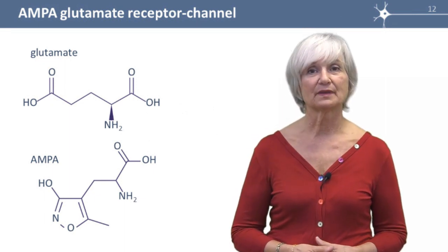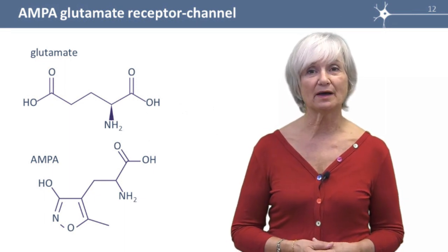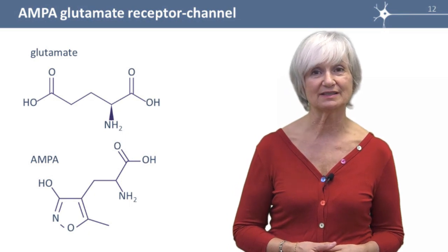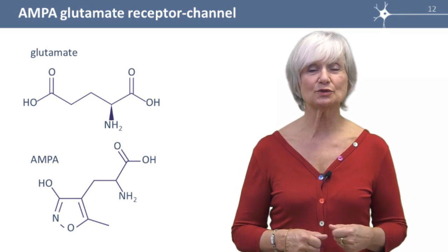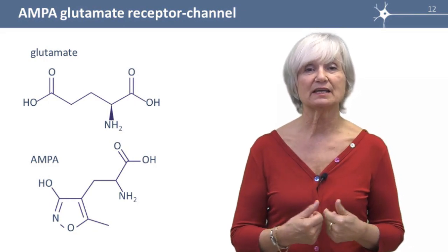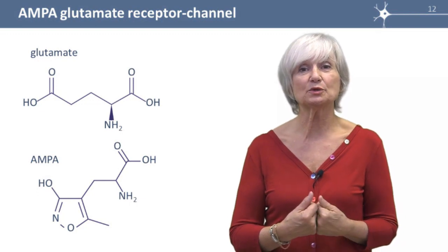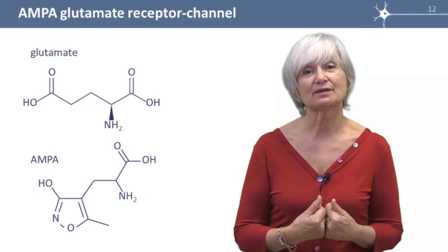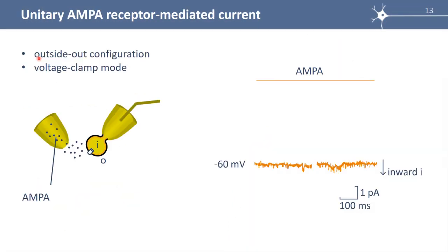Here it's AMPA, which opens AMPA receptor channels. It's a glutamate agonist. When we want to record AMPA-mediated current only, we use AMPA because otherwise, if we used glutamate, we would open all the glutamate-sensitive receptor channels. To record the unitary AMPA current, we use the outside-out configuration and voltage clamp mode to record a current, and we apply AMPA in the extracellular medium to open AMPA receptor channels and only those ones.